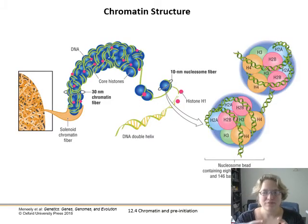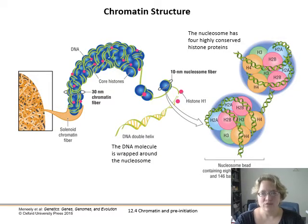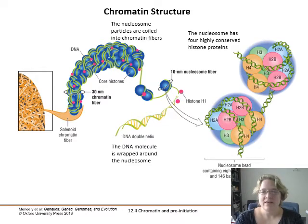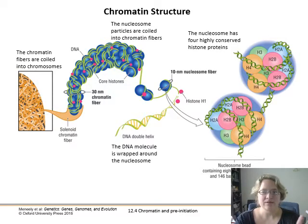We've looked at chromatin structure before in chapter two. We have our DNA molecule, which is wrapped around a nucleosome. The nucleosome has four highly conserved histone proteins, pairs of each, giving us a block of eight. Those nucleosome particles are coiled up into chromatin fibers, which are then wrapped up into chromosomes. We don't need to worry about the diameters, but we should know what a nucleosome is.